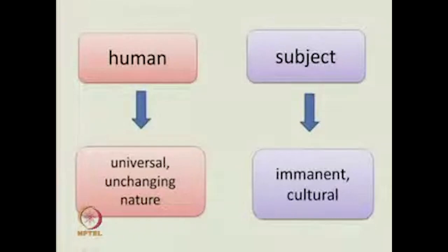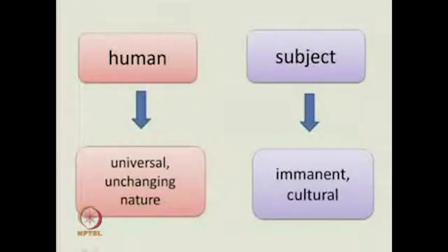For instance, when you say 'human' and when you say 'subject,' the difference is: when you say human, we refer to something universal and unchanging. When you say 'human nature,' you are in effect saying there is something called human nature which is applicable to all human beings — something that is unchanging and universal. Deep structures from evolutionary studies would tell you, for instance, that the eight emotions we have, and the strongest of them, fear, are part of human nature.